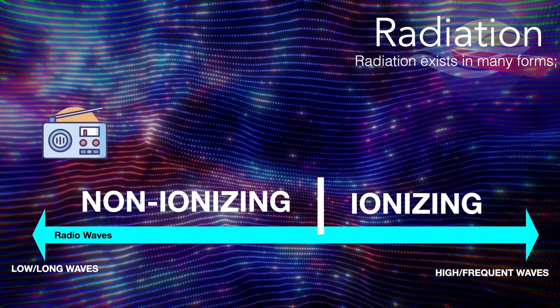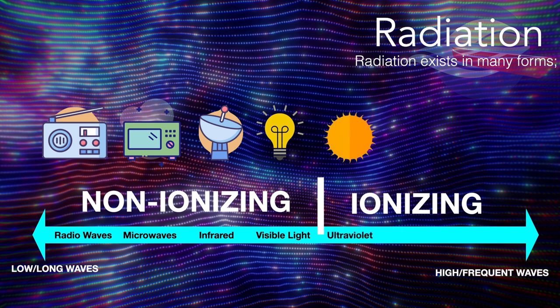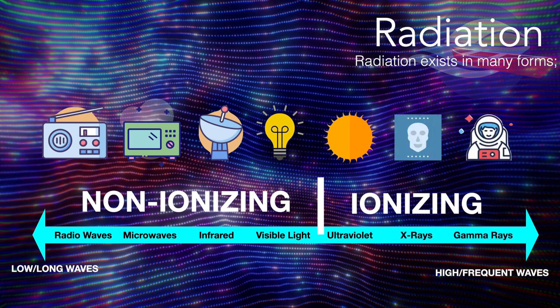Here's another visual example of the scale of radiation and how it exists in many forms. We have our non-ionizing — things like radio waves, microwaves, infrared, and visible light, everything that we can see. And then as we get to higher, more frequent waves that have more penetrating power — the waves from the sun in our UV light, our x-rays, and our gamma rays and cosmic rays — those are all ionizing, and those are the ones that can cause us harm.